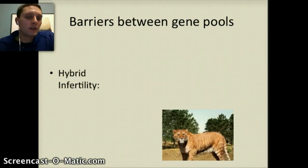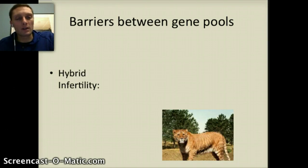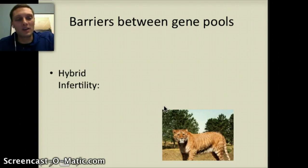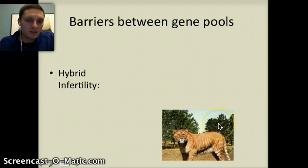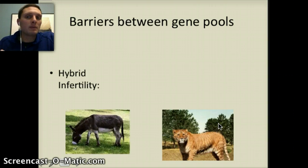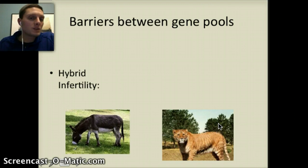The second barrier is hybrid infertility — the inability of two different organisms to reproduce and have offspring that are themselves fertile. A great example is the liger, where a female tiger and a male lion reproduce to produce a liger. Ligers are not able to reproduce — they're actually extremely large animals, much larger than a lion or tiger, but they're infertile. Another example is the mule, which is the cross of a donkey and a horse. Because a horse and donkey can reproduce to create a mule, but that mule is infertile, this is hybrid infertility.